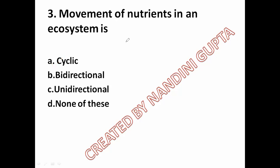The nutrient movement is the nutrient cycle, which is cyclic because the ecosystem involves cyclic movement. So the correct answer is option A, cyclic.